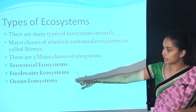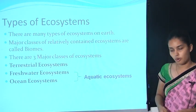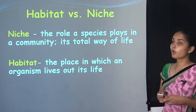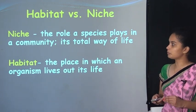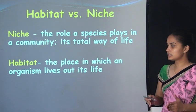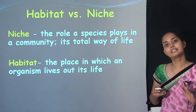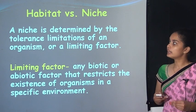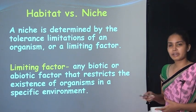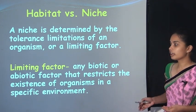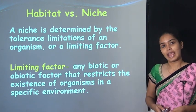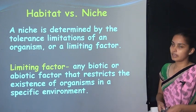In the aquatic ecosystem, they are further divided into freshwater ecosystem and ocean ecosystem. What is a habitat or niche? A niche is the role a species plays in a community — its total way of life. The habitat is the place in which a species or organism lives out its life. A niche is determined by the tolerance and limitations of an organism, that is the limiting factors. Any biotic or abiotic factor that restricts the extension of an organism in a specific environment is known as a limiting factor.